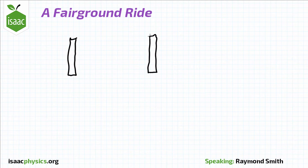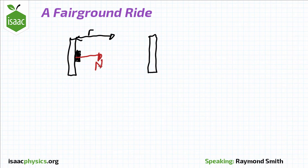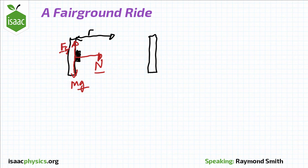To answer this question we need to consider the forces acting on the thrill-seekers. The centripetal force is the normal reaction force, which we know is equal to m omega squared r. This needs to be the case to keep the thrill-seekers moving in the circle.